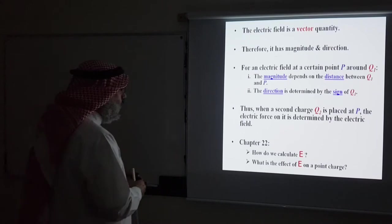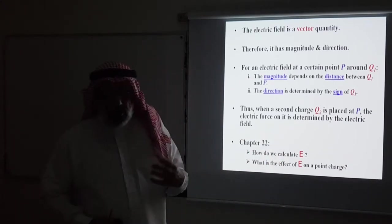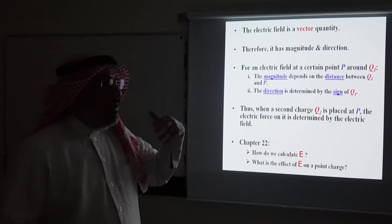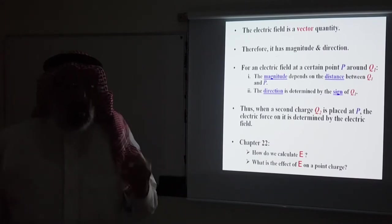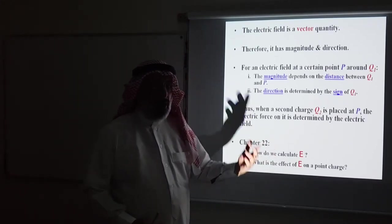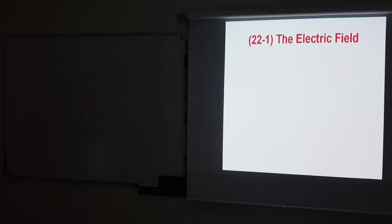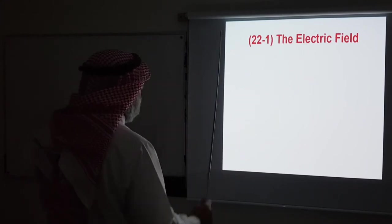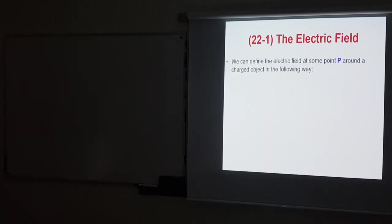In chapter 22 we have two lectures. In the first lecture today, we want to see how to calculate the electric field produced by point charges. In the next lecture, we will do the opposite: given an electric field already set up, we want to place a point charge inside it and see what effect the field has on that charge. Today, let's start with section one to discuss and find the electric field produced by a point charge.